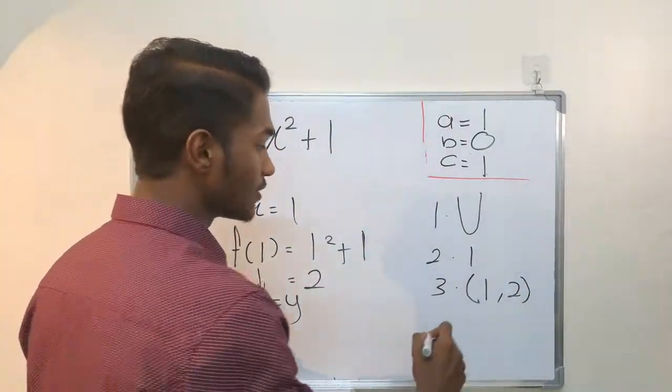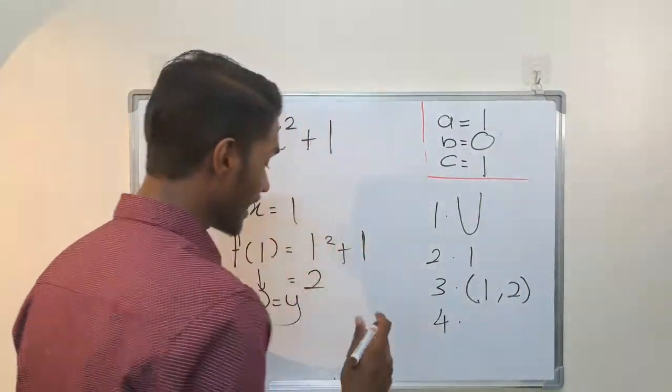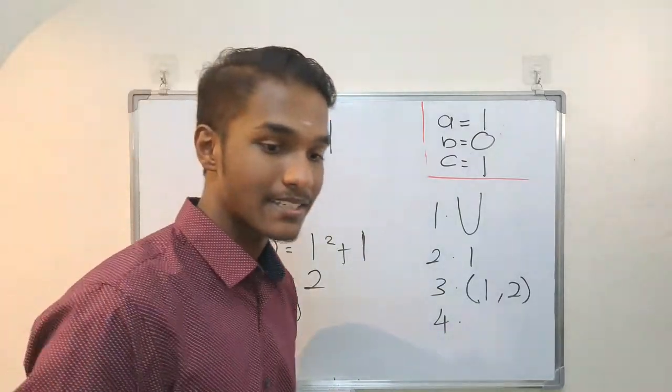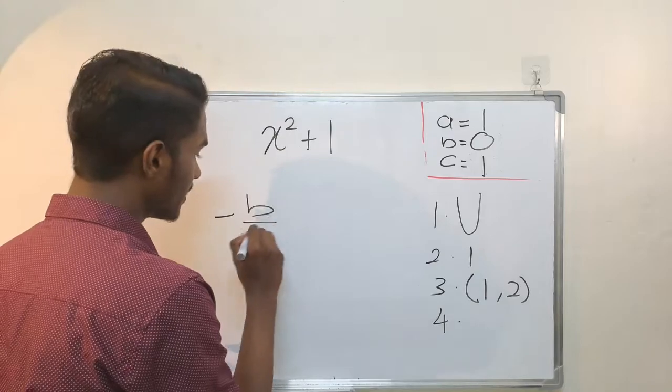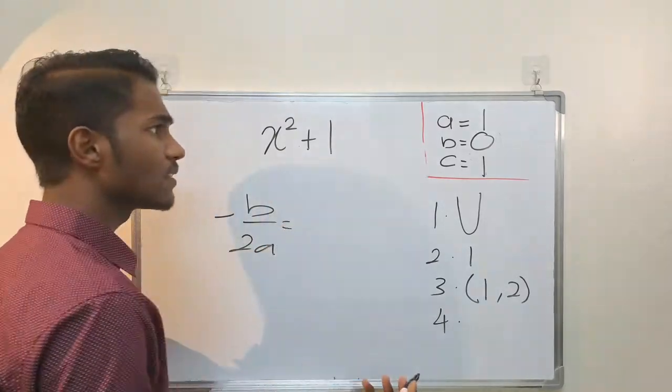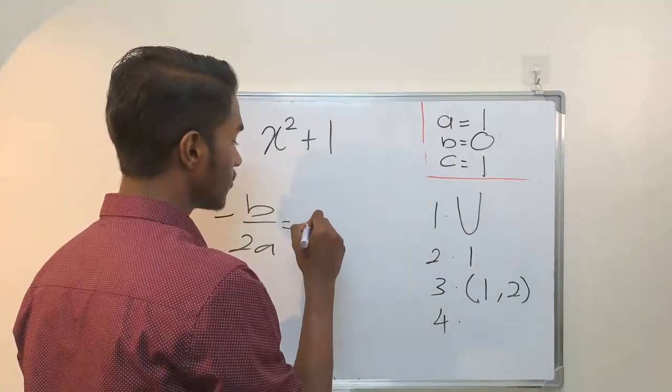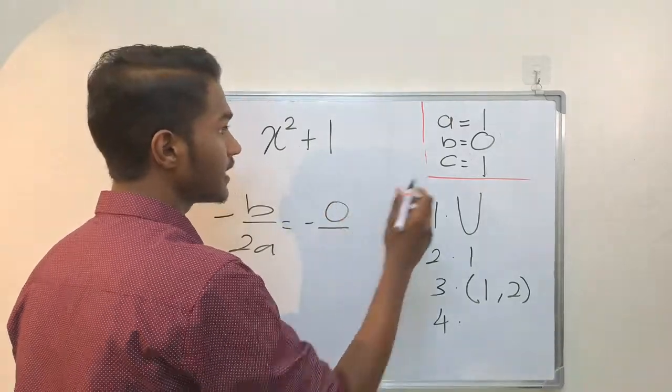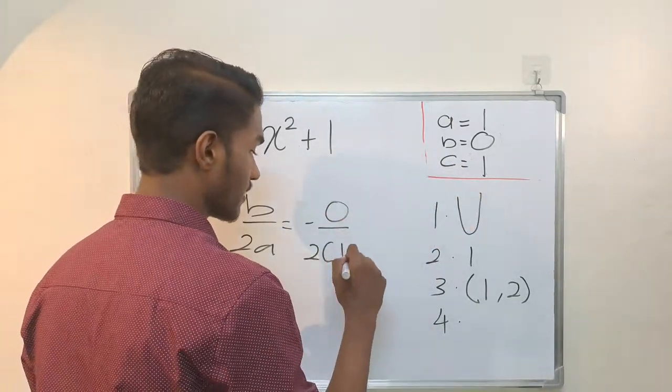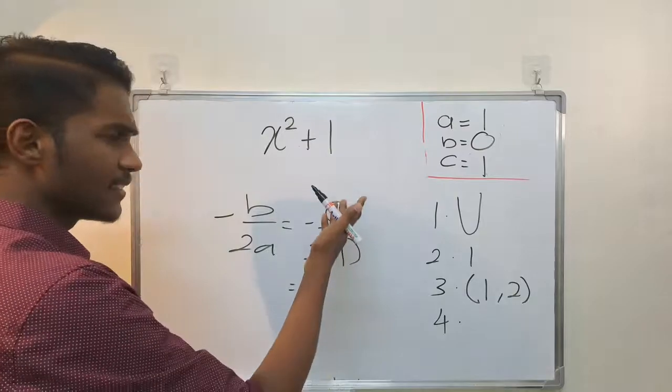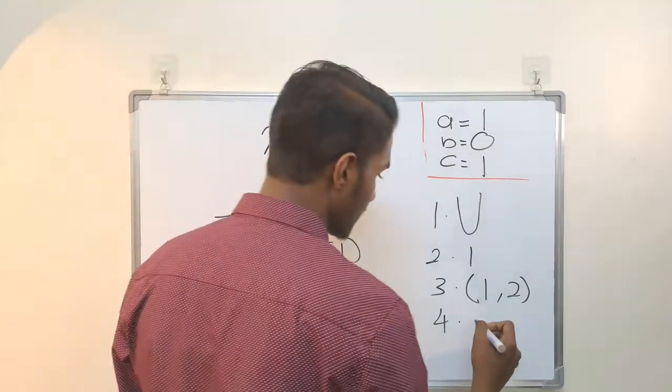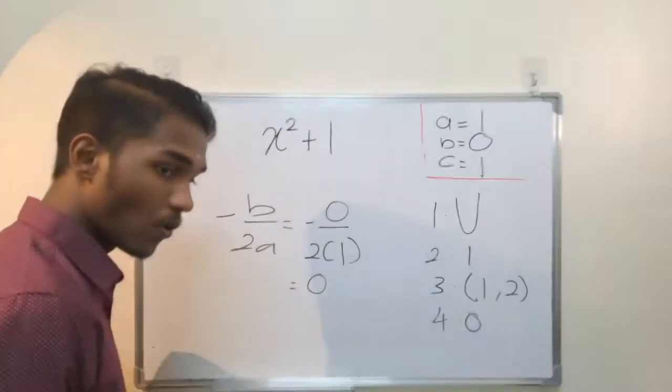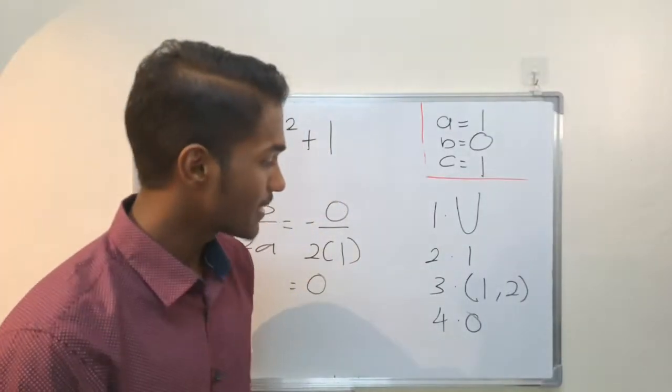Number four, the axis of symmetry is negative b over 2a. So negative b over 2a, b is 0, divided by 2 is equal to 0. The answer will be 0. So this is 0. So this is the axis of symmetry.